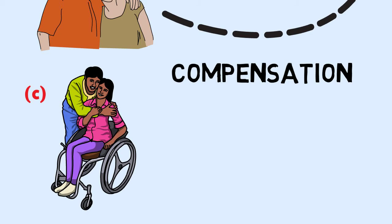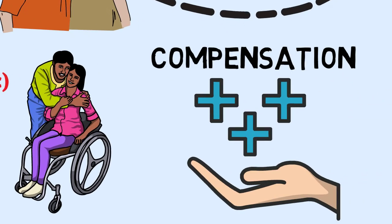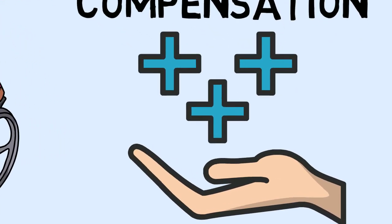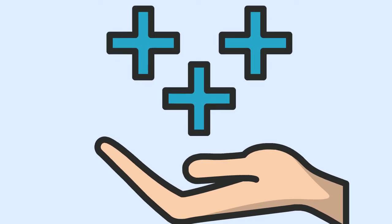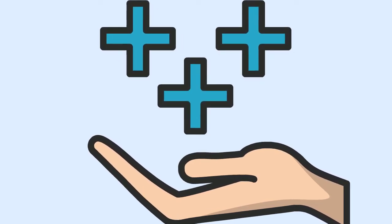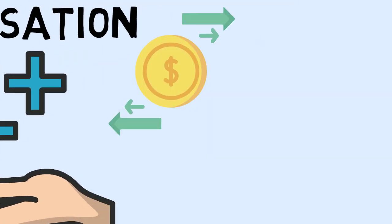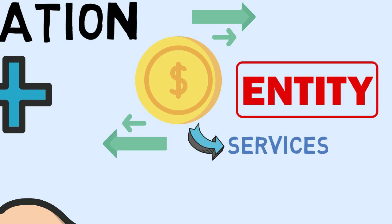Compensation includes all the employee benefits as defined in IAS-19, Employee Benefits, and IFRS-2, Share Based Payment. Employee benefits are all forms of consideration paid, payable or provided by the entity or on behalf of the entity in exchange for services rendered to the entity. It also includes such consideration paid on behalf of a parent of the entity in respect of the entity.